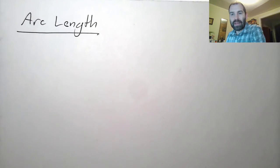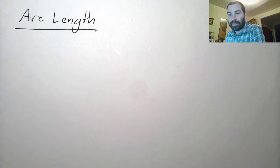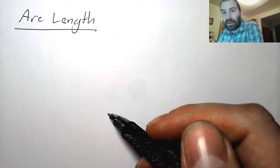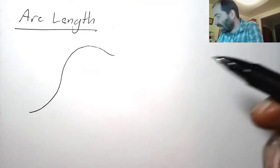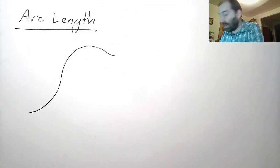So the measurement of the length of a curve is called arc length. Suppose we have a vector function, and it has given us a curve. It plots with a curve like this.